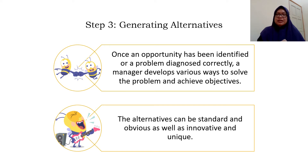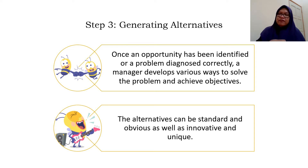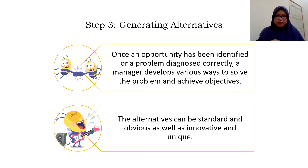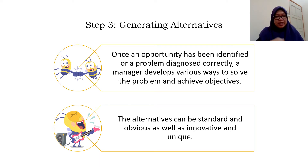Step 3 is generating alternatives. The manager develops various ways to solve the problems and achieve objectives. After being clear about the problems and knowing what objective they have to fulfill, it's time for them to list out all the choices and options — the alternatives they have in order to solve the problems.